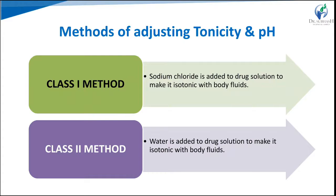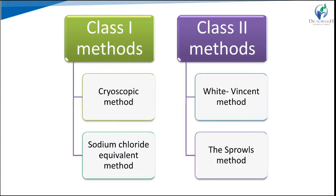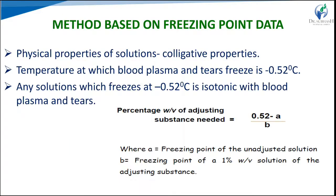For adjustment of tonicity, there are Class 1 and Class 2 methods. In Class 1, sodium chloride is added to the drug solution to make it isotonic with body fluid. Class 1 includes the cryoscopic method and the sodium chloride equivalent method. In Class 2, water is added to the drug in sufficient amounts to form the isotonic solution; Class 2 includes the White-Vincent method and Sprowls' method.